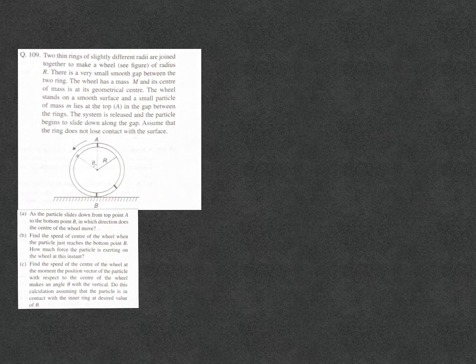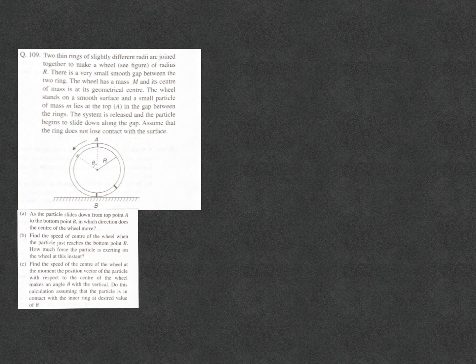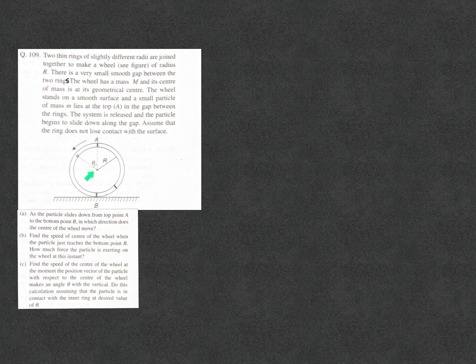Have a look at this question. Two thin rings of slightly different radii are joined together to make a wheel of radius capital R, so the inner and outer radii are almost the same and equal to capital R. There is a very small smooth gap between the two rings. The wheel has mass capital M and its center of mass is at the geometrical center. The wheel stands on a smooth surface, so this surface is smooth and there is no friction.